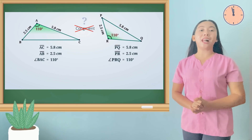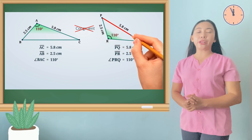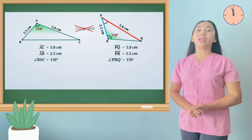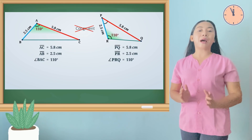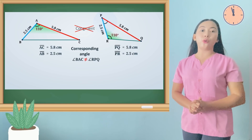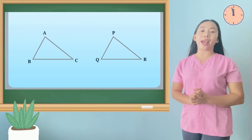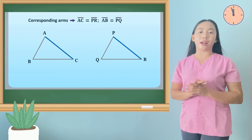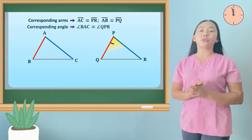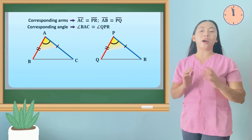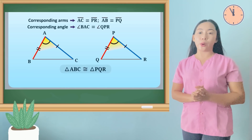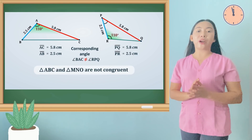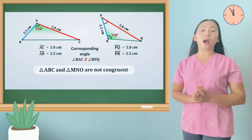Because of angle PRQ — it is not between sides PQ and PR. Angle PRQ is not the included angle between sides PQ and PR. Corresponding angles BAC and RPQ are not equal. Remember that under the SAS congruence postulate, the angle must be the included angle between the two sides. In our example, the corresponding angles are not equal. Therefore, triangle ABC and triangle PQR are not congruent.